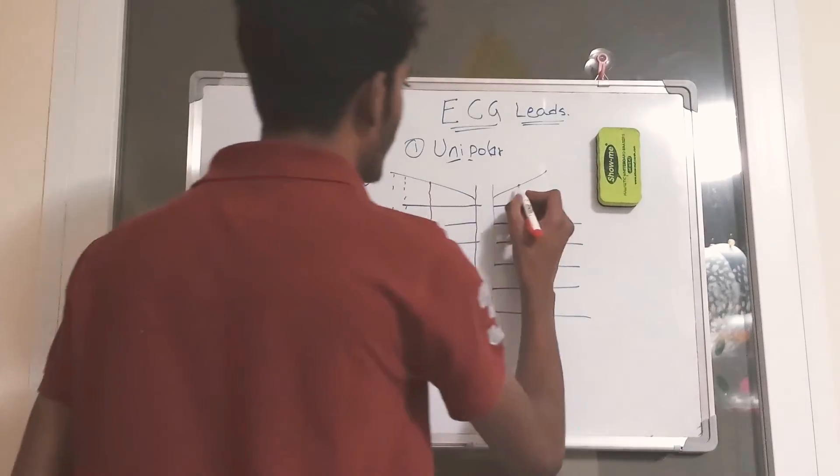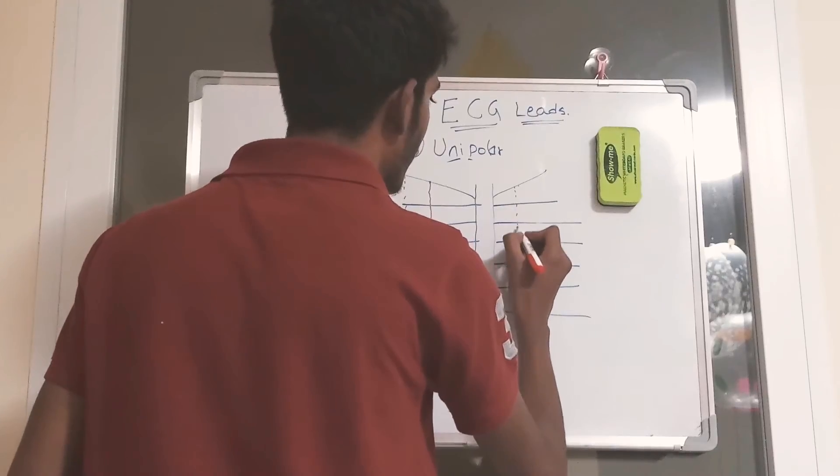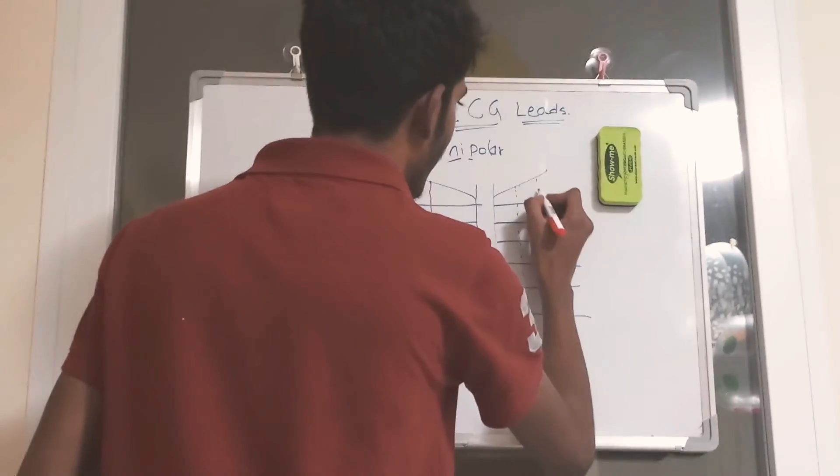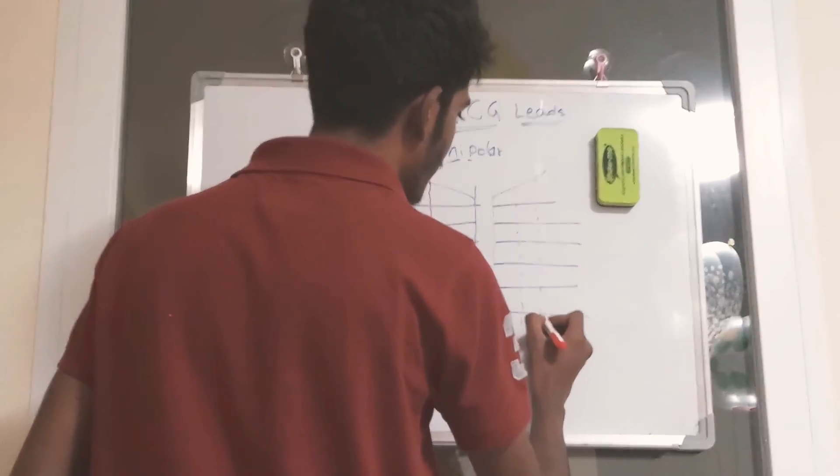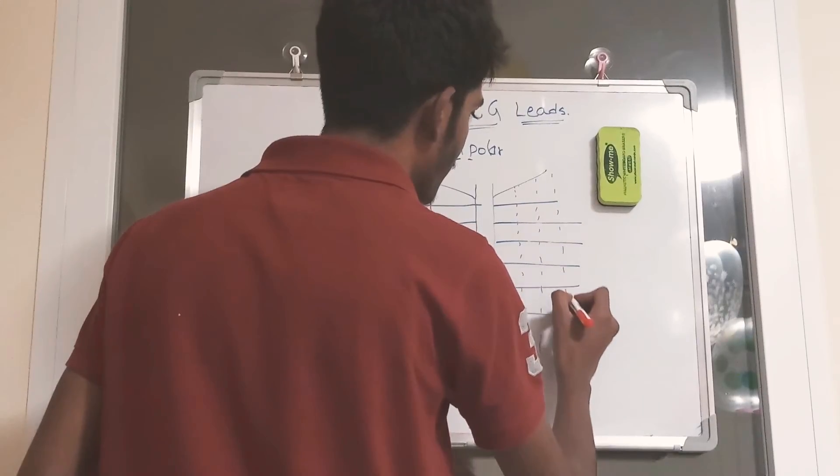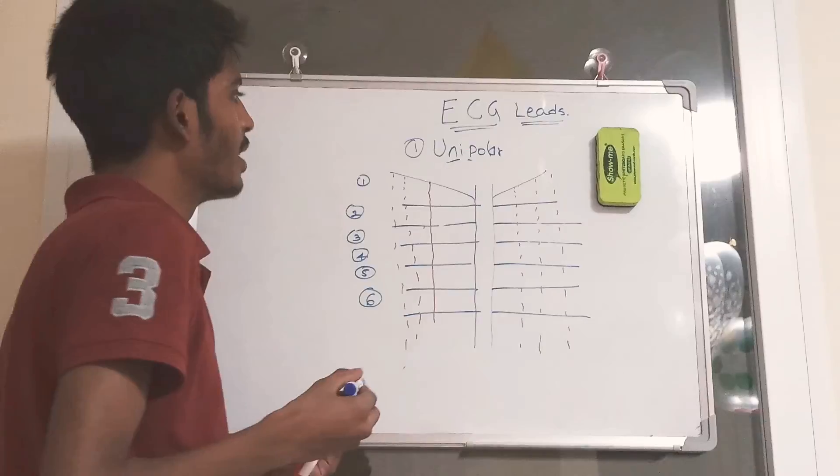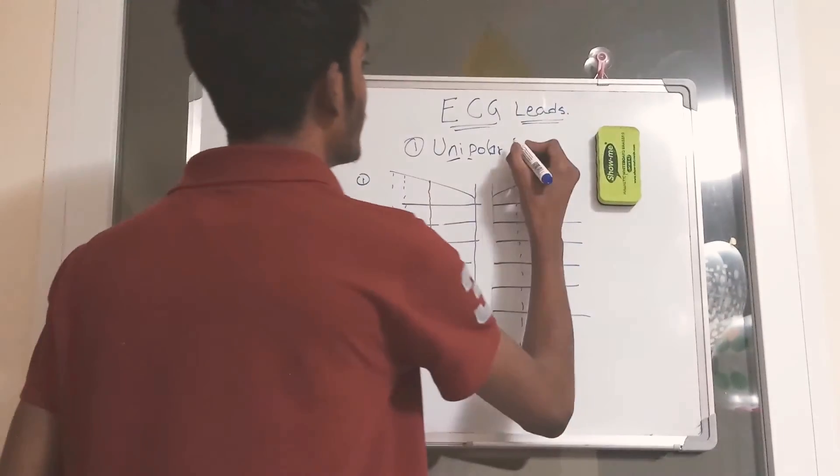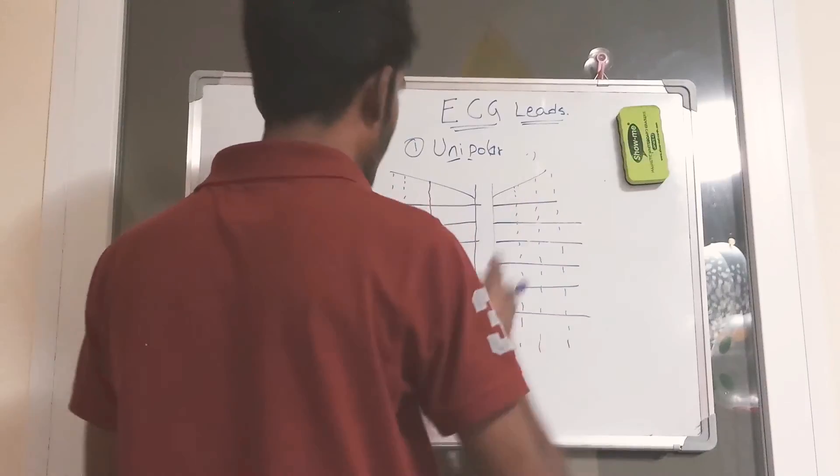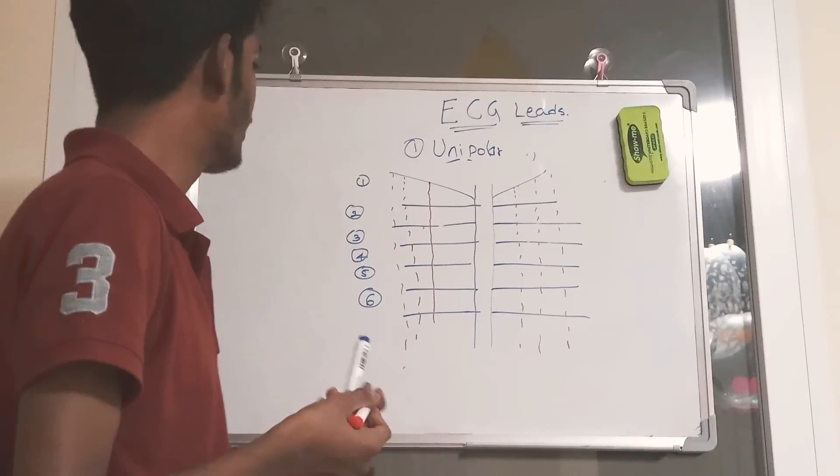The same thing here, mid-clavicular line, anterior axillary, and mid-axillary. We have six unipolar chest leads, those are from V1 to V6. First, we'll start from V1.